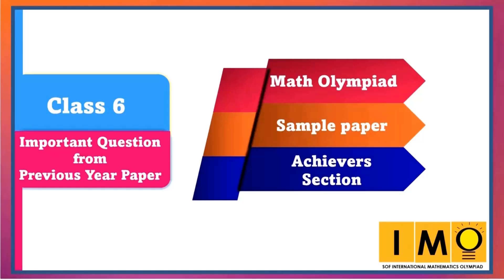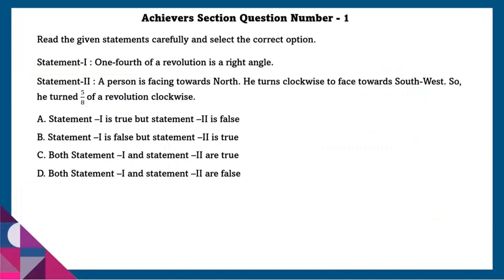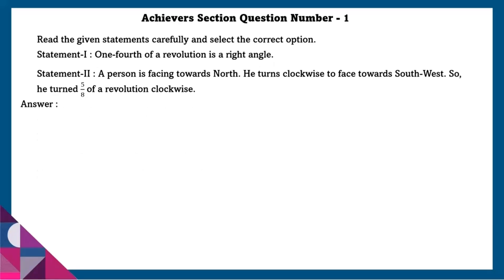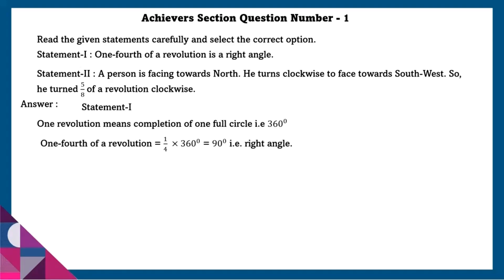Today we are looking at Class 6 Max Olympiad sample papers, Achiever section. Question number 1: Read the given statements carefully and select the correct option. Statement 1: One-fourth of a revolution is a right angle. One-fourth of a revolution, that is 1/4 of 360, is equal to 90 degrees, which is a right angle. So statement 1 is true.